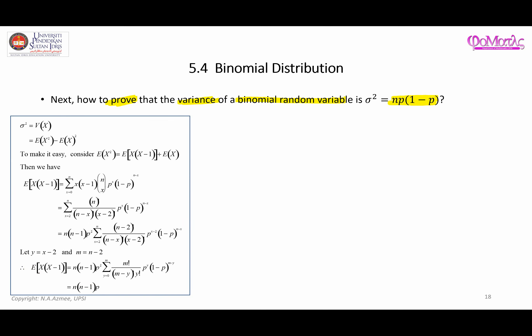Let me walk through this guideline. The first step is to remember that if you want to find the variance of x, this is the common formula. This part here is going to be a bit challenging, so we can make it easier by finding the expected value of x(x-1) instead of finding E[X²] directly. You add that with the expected value of x.